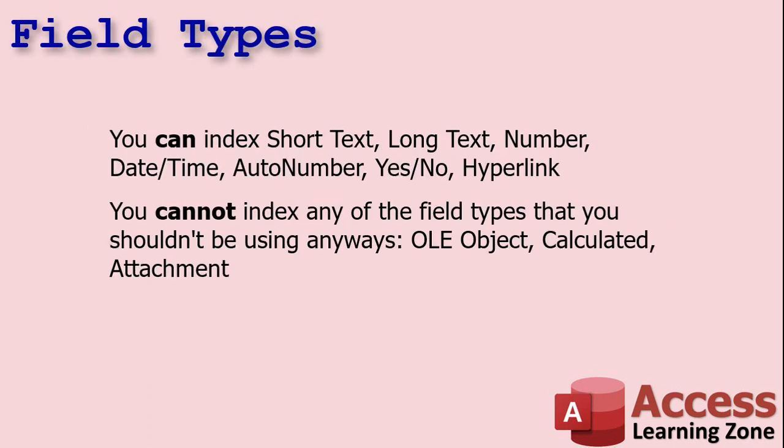Let's talk about field types. You can basically index every type of field that you should be using, although you might not always want to. You can index short text, long text, number, date/time, auto number, yes/no, and hyperlink fields. You cannot index the evil field types you shouldn't be using anyway: OLE object — basically pictures and documents stored in the database — we don't do that. Calculated fields: we don't put calculated fields in our tables, we save that for queries. And attachments — again, evil.